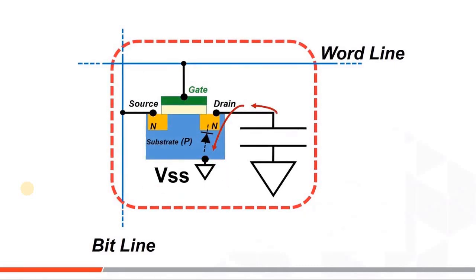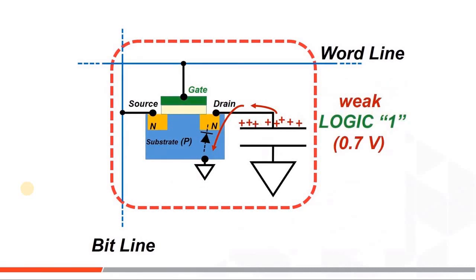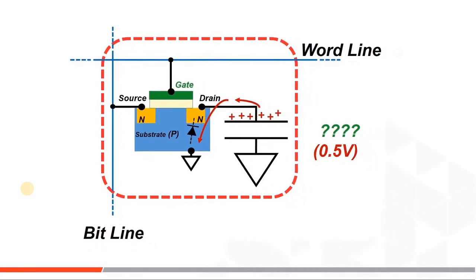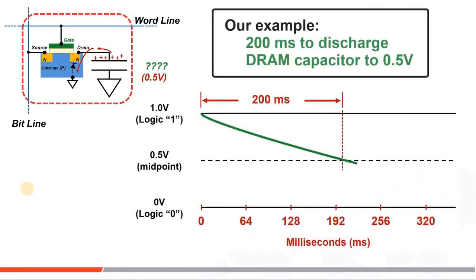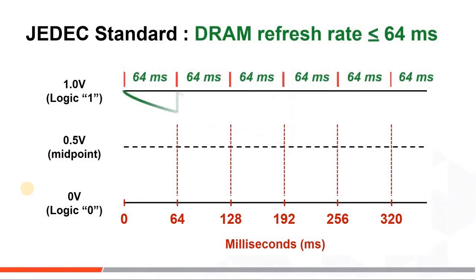There is a small leakage path from the gate's drain into the substrate through a reverse diode junction when the gate is off. The capacitor will discharge after some finite time and fall below the midpoint of 0.5 volts. In this example, that finite time is around 200 milliseconds, or one-fifth of a second. The JEDEC committee standard for refreshing every DRAM capacitor on an IC is every 64 milliseconds or less.